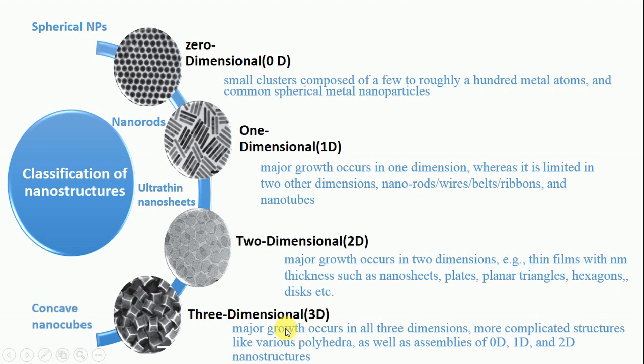Fourth one is the concave nanocubes. These nanoparticles are three-dimensional particles. Their major growth occurs in all three dimensions: x dimension, y dimension, and z dimension. More complicated structures like various polyhedra as well as assemblies of zero dimension, one dimension, and two dimension nanostructures.